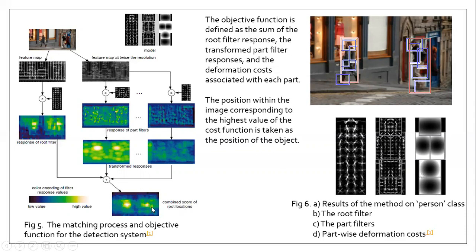Using the combined scores, we obtain the most likely positions where the object could be present — positions with a high value of the objective function. As you can see, this method has worked well: the two persons have been detected and their subparts have also been detected with great accuracy. These are the filters used: a root filter for detecting a person, and subpart filters for head, legs, and so on. The deformation costs represent how much cost is incurred when certain parts are deformed.